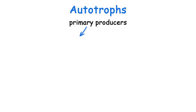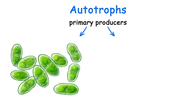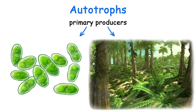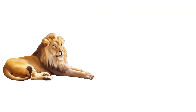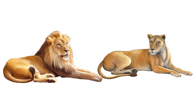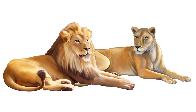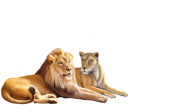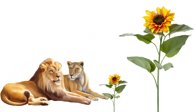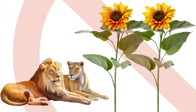Autotrophs are the primary producers on this planet and are comprised of largely algae and plants. Unlike most commonly recognizable animal reproduction, reproduction in autotrophs is very different.